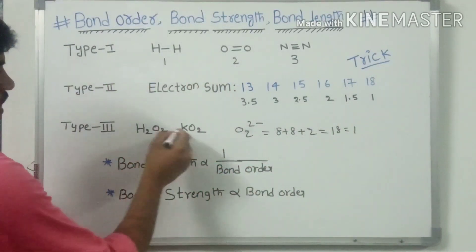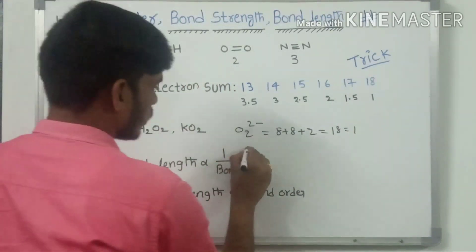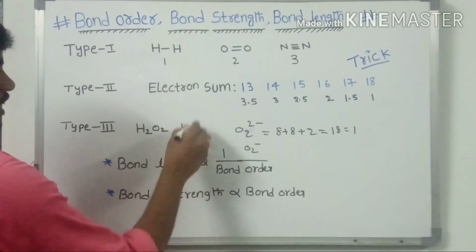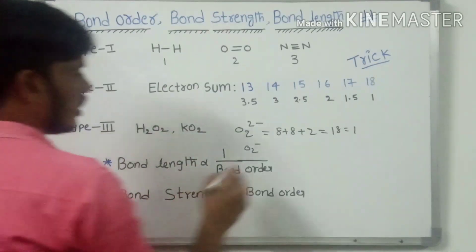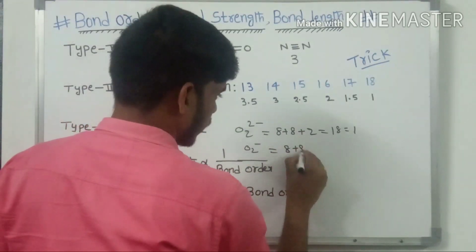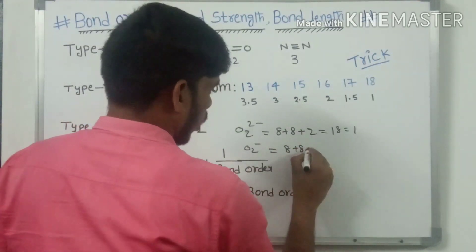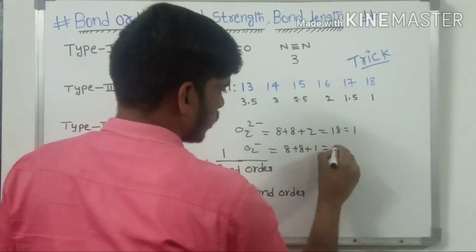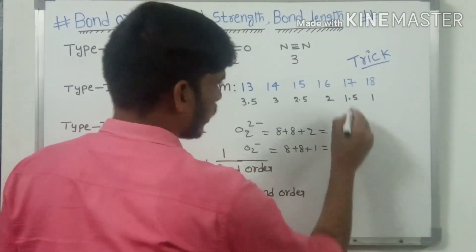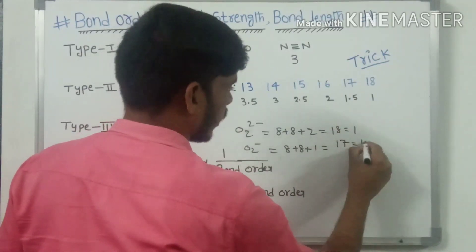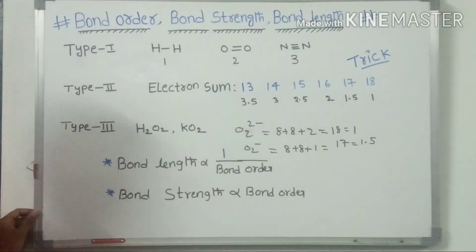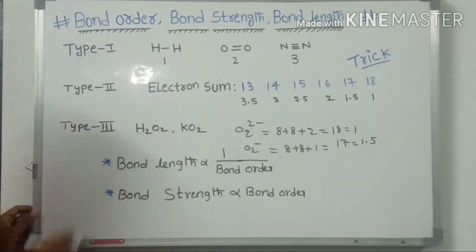For K₂O₂: it dissociates into K⁺ and O₂⁻. Therefore, the electron sum for O₂⁻ is 8 + 8 + 1 = 17. Therefore, the bond order of K₂O₂ is 1.5. This completes the Type 3 examples.